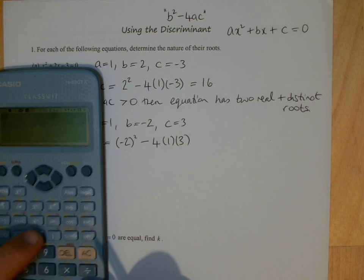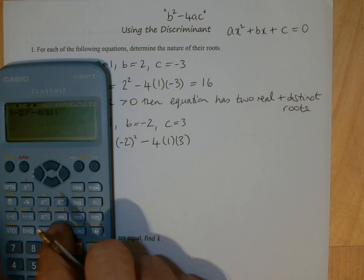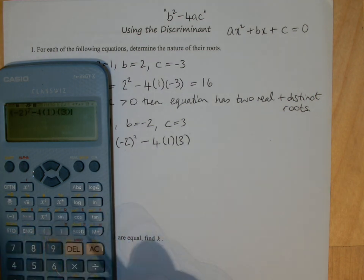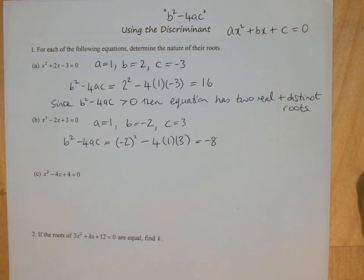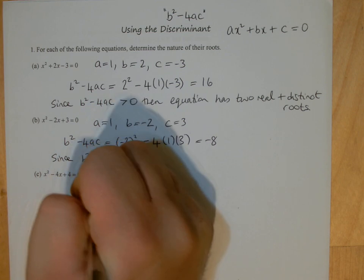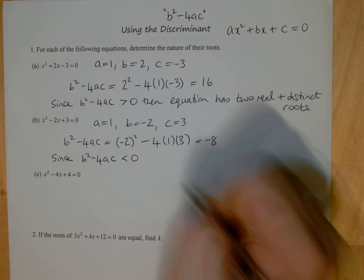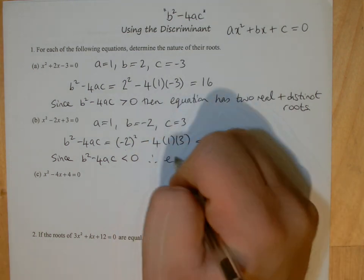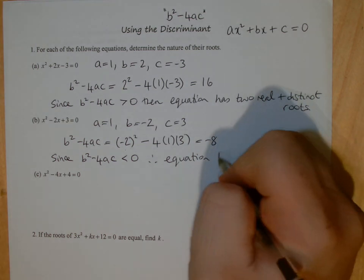So in this case here, bracket minus 2, bracket squared minus 4 times 1 times 3, and we get negative 8. So in that case, we've got b squared minus 4ac is negative, less than 0, so therefore the equation, since it's less than 0, has no real roots.